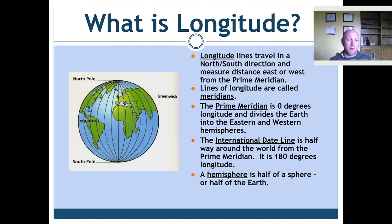All of the meridians actually meet each other at the North Pole and the South Pole. They literally start at the North and South Pole and are farthest apart at the equator. Then as you get closer to the poles, they draw closer together again, which you can really see nicely in this picture.